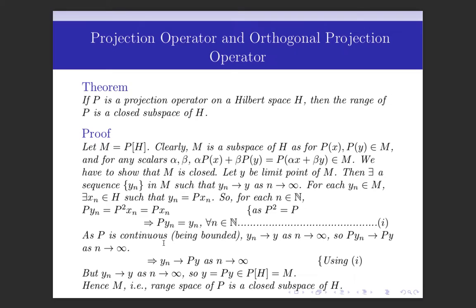Since P is continuous — because it is bounded, and any projection operator is bounded — P is also continuous and therefore sequentially continuous. Since Yn converges to Y as n tends to infinity, P·Yn converges to P·Y as n tends to infinity. And since P·Yn equals Yn, this implies Yn converges to P·Y. But we also have Yn converges to Y, so these limits must be equal, giving Y equals P·Y.